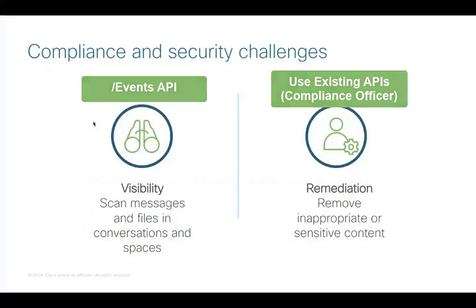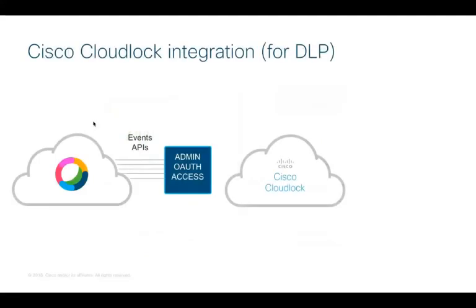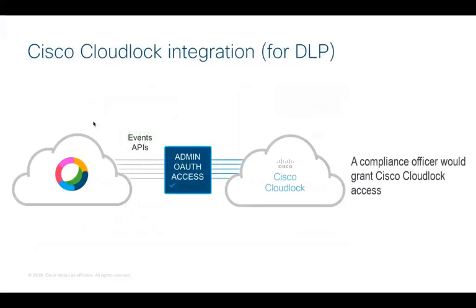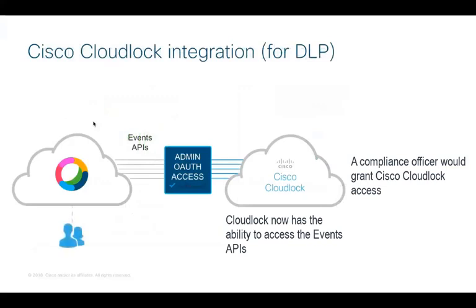Next, let's walk through a specific data loss prevention solution that we offer through Cisco CloudLock. CloudLock connects to WebEx Teams using the Events APIs via an OAuth authentication flow. A compliance officer would grant Cisco CloudLock access to view the WebEx Teams platform for their organization. CloudLock now has the ability to access the Events APIs for that particular organization within WebEx. This is an example of how partners, utilizing APIs and CloudLock, have the opportunity to develop specific value-added services helping customers to develop and monitor how content is used within their organization.